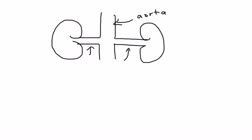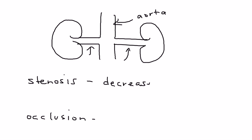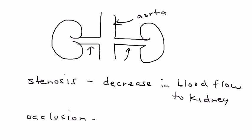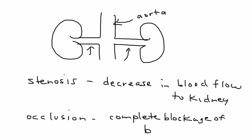When you talk about renal artery stenosis, there are two types of things to discuss. The first is stenosis and the second is occlusion. Stenosis refers to anything that causes a decrease in the blood flow to the kidney. Occlusion describes something that causes a complete blockage of blood flow to the kidney.